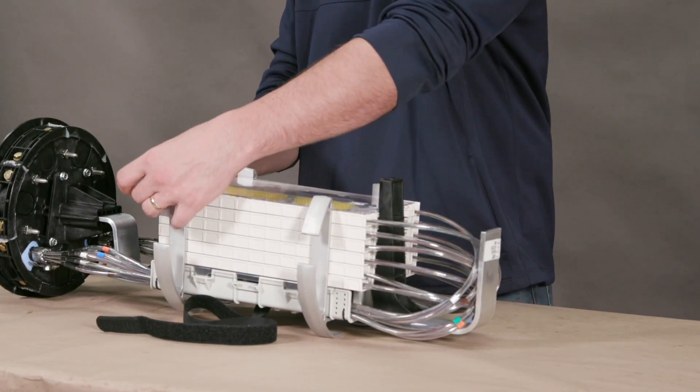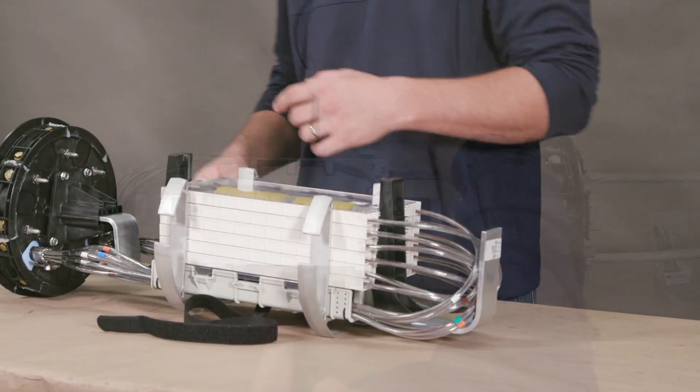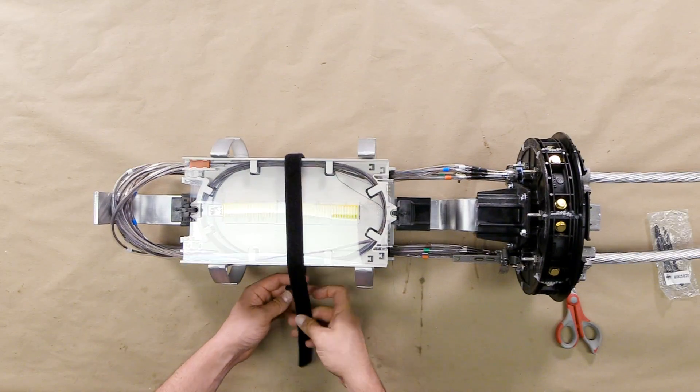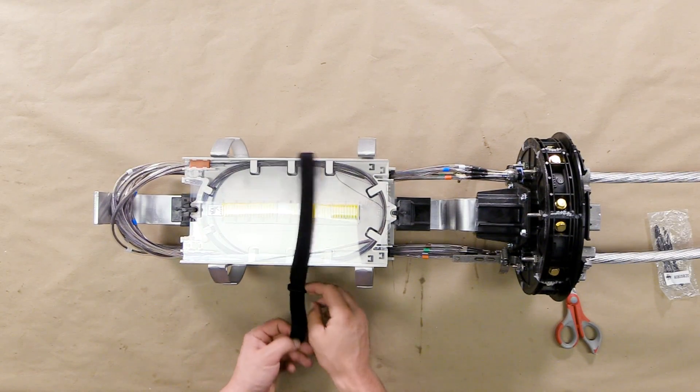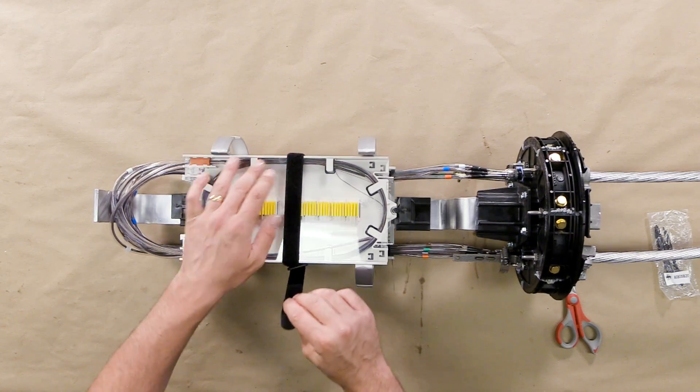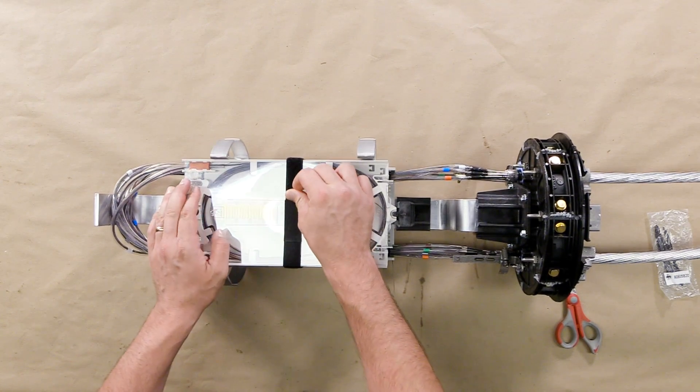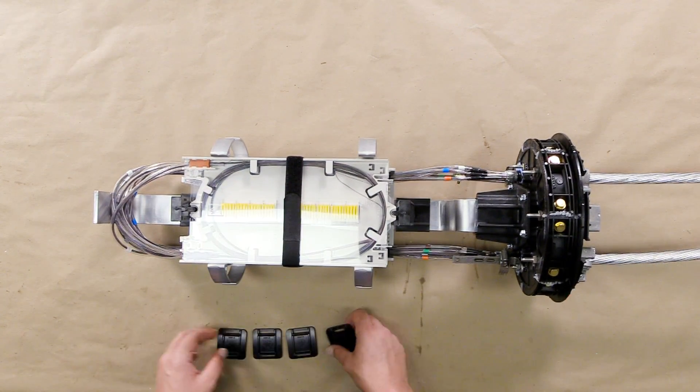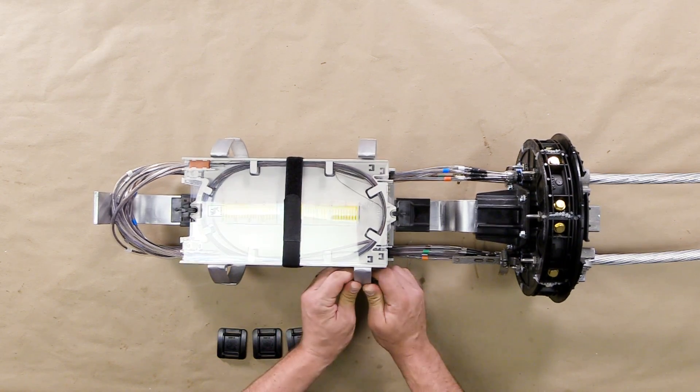Once all trays are installed, secure them down with the Velcro strap. Install outer storage channel retainer clips.